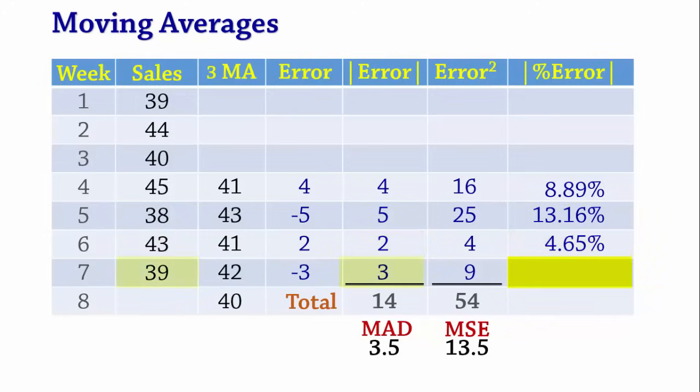And finally, for week 7, it is 3 divided by 39 which gives 7.69%. The sum of these absolute errors is 34.39%. And on dividing it by 4, we obtain the mean absolute percent error of 8.60%.